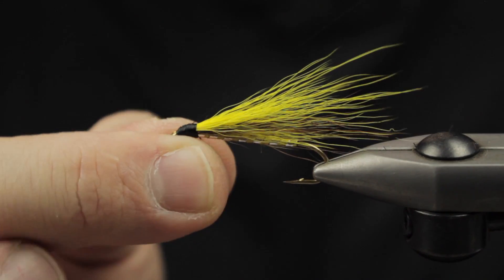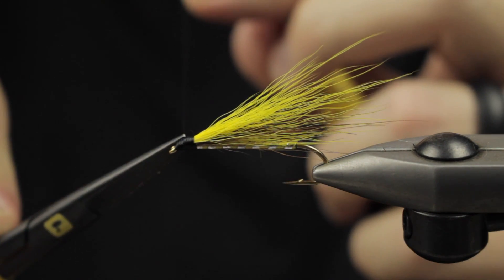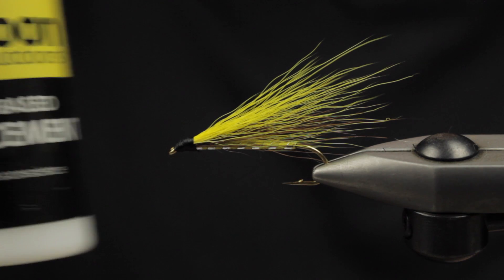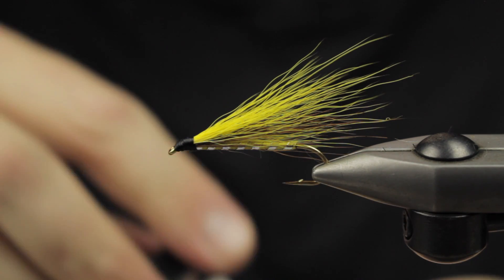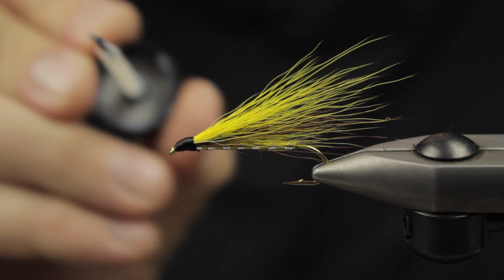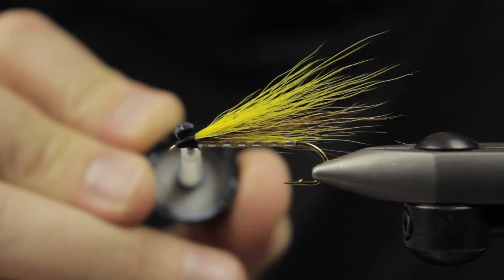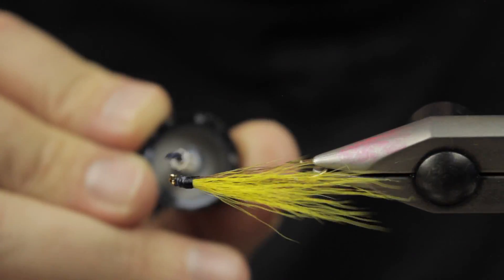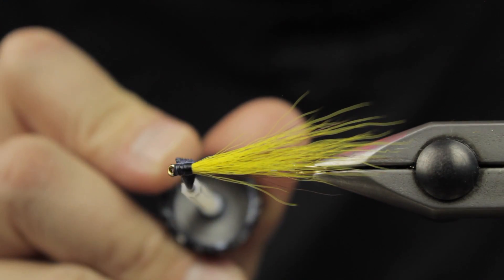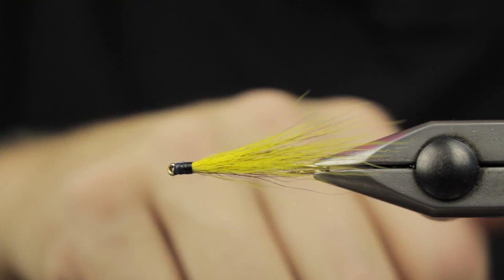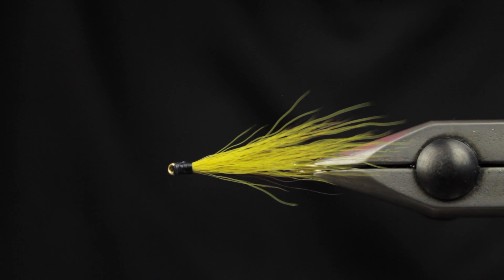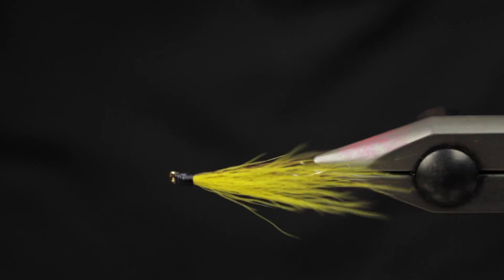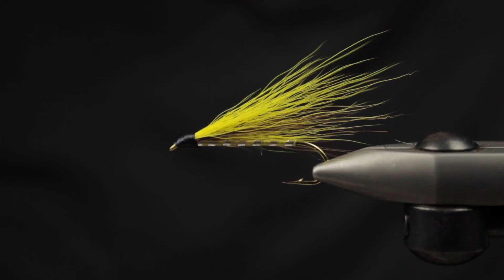Next up, just a little bit of our water-based head cement will help hold everything in place. Great thing is it penetrates deeply, so it'll actually end up gluing the bucktail to the bucktail to the hook shank to the thread, and really add durability to your fly pattern. Simple bucktail streamer, thanks for watching.